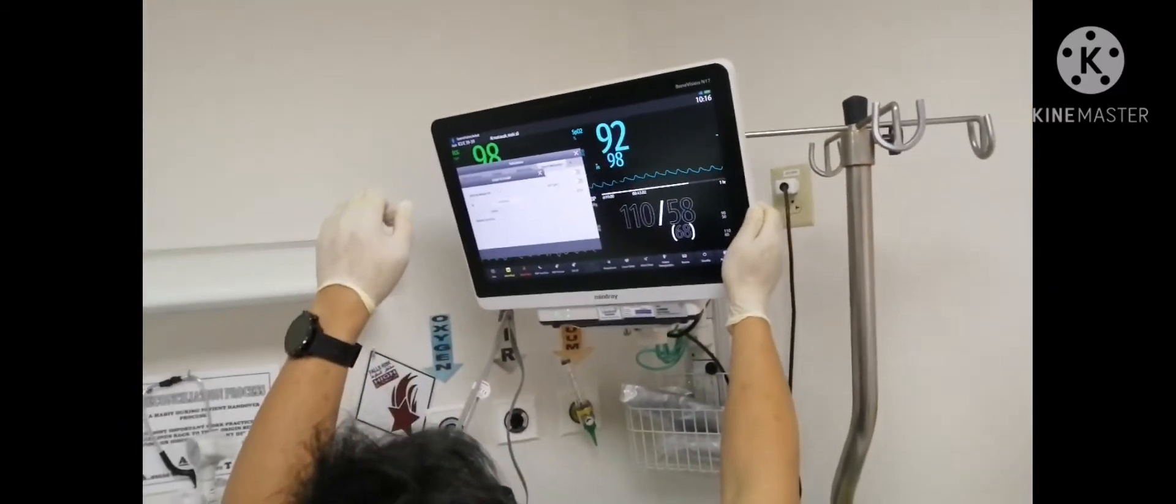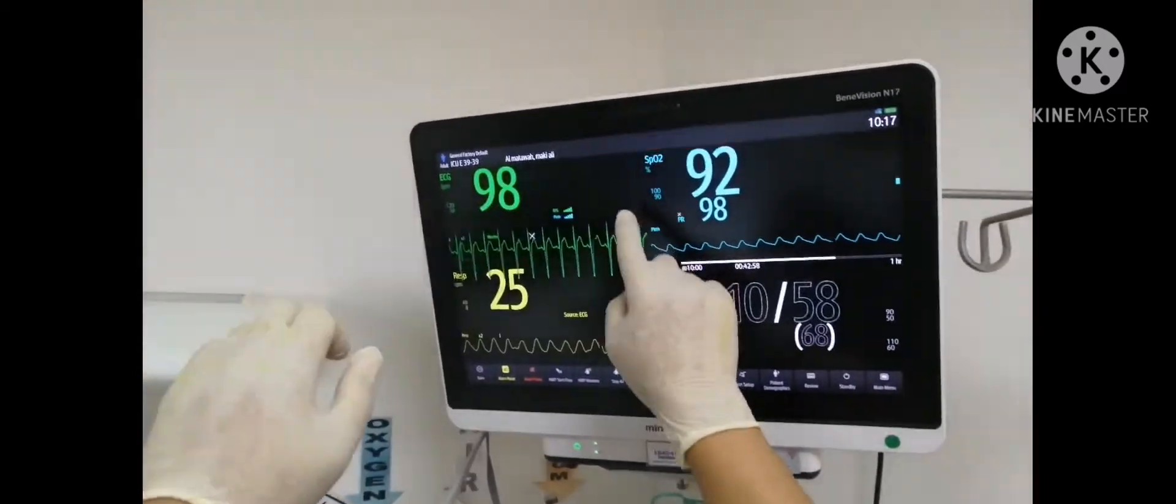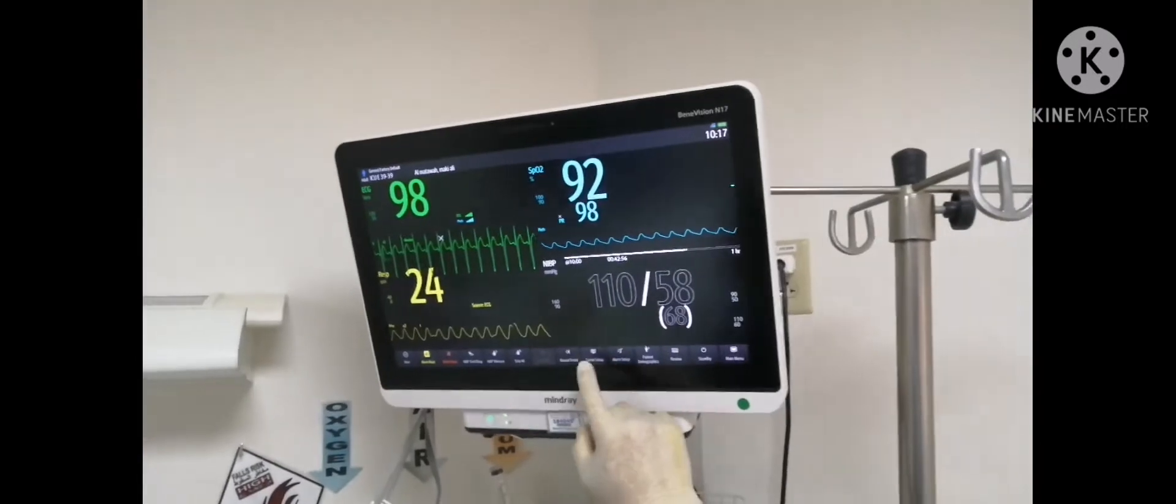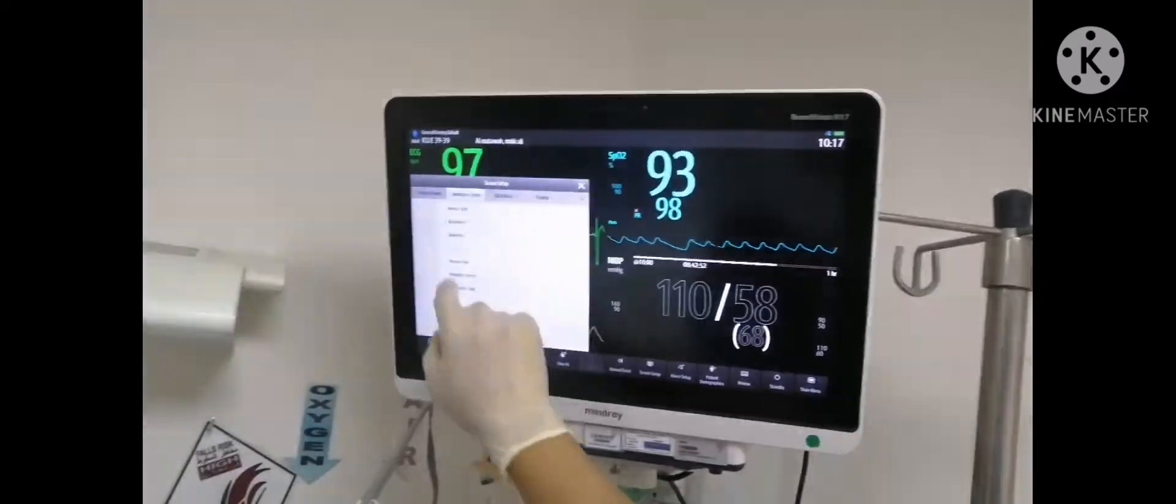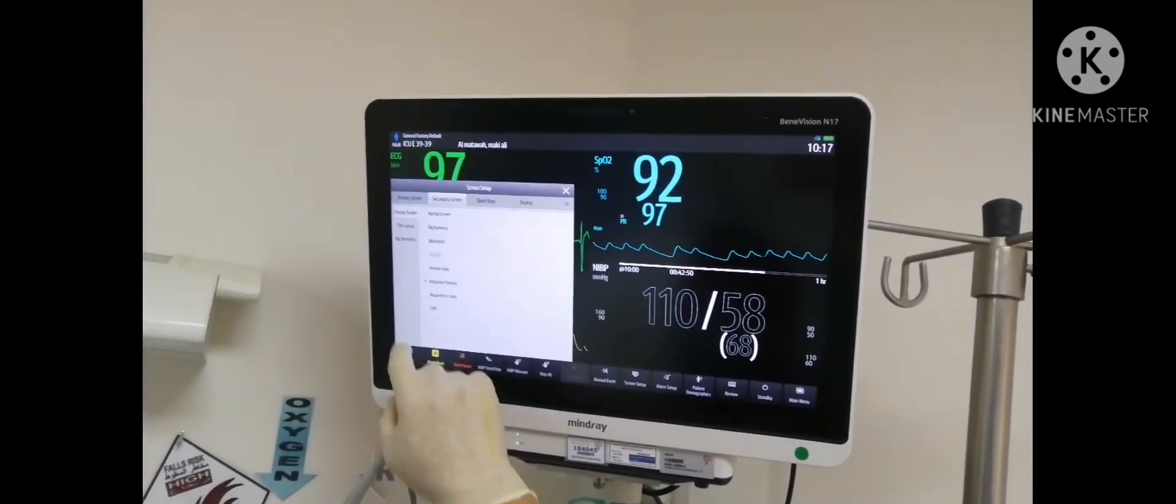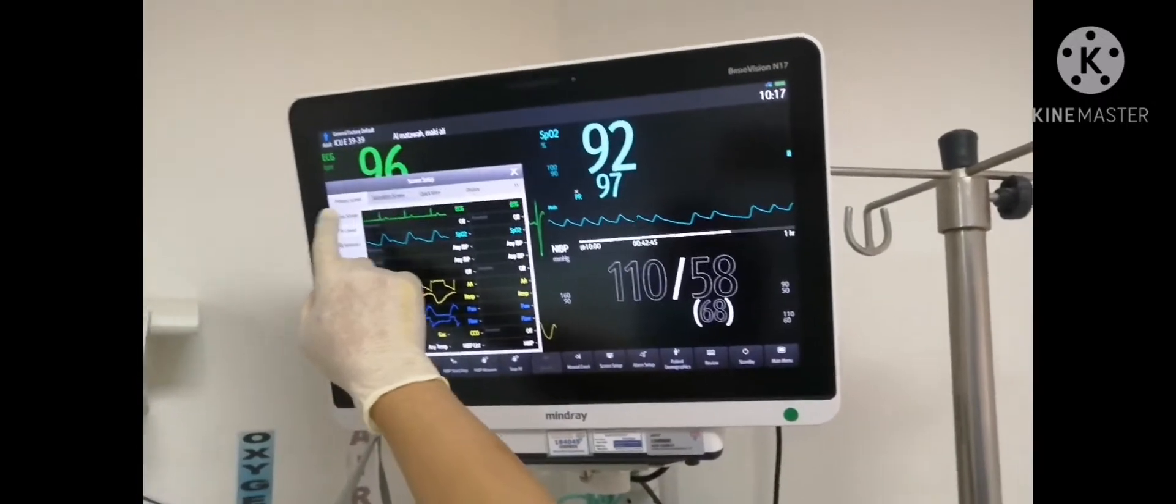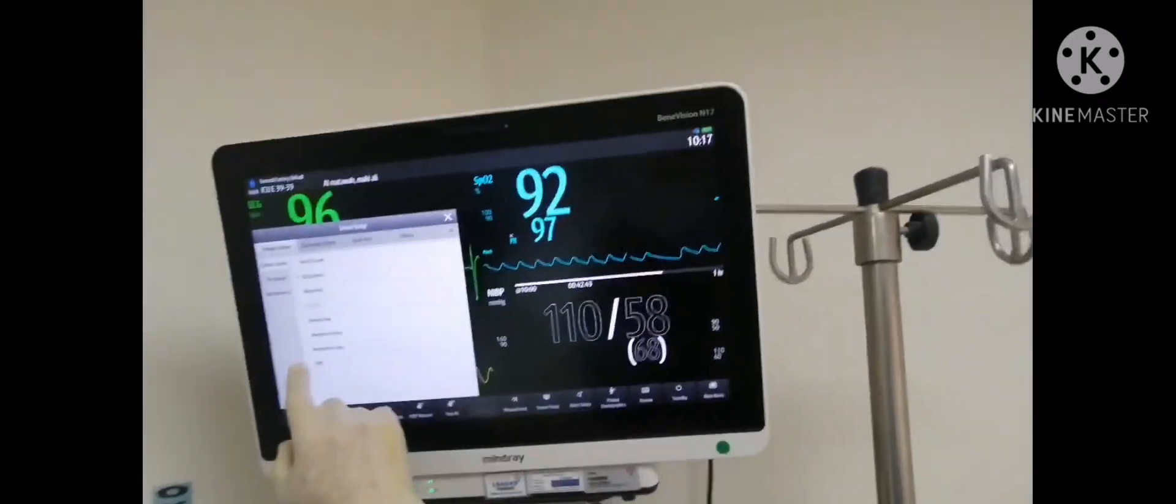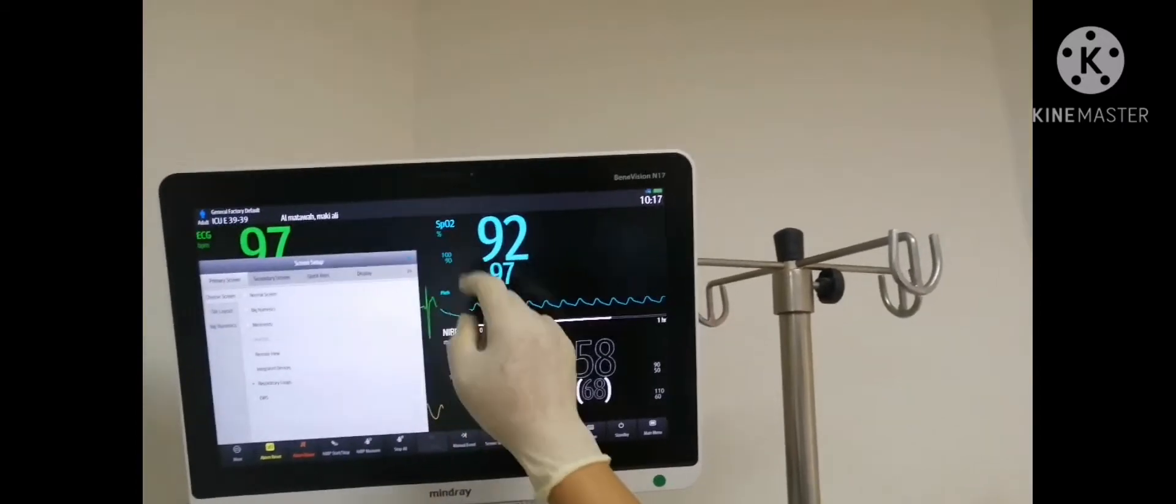Okay, 3D. Now it's confirmed. It's very easy. Go to the screen setup. Go to the secondary, make it integrated device. Then go to the primary screen. Choose, then make it loops. Respiratory loops. Okay.